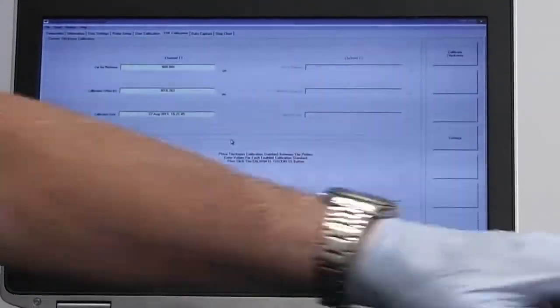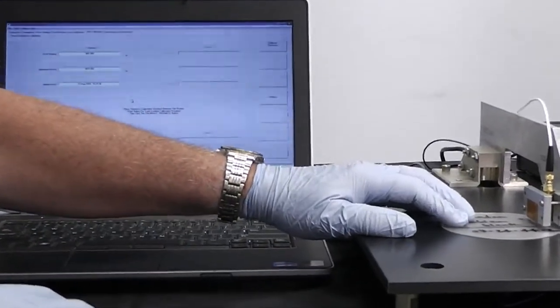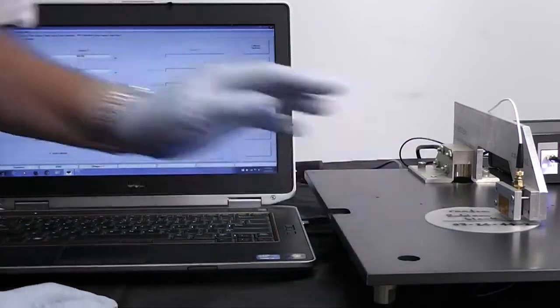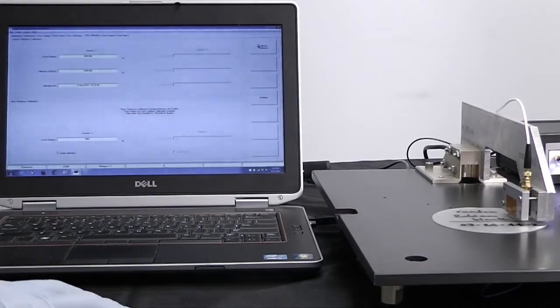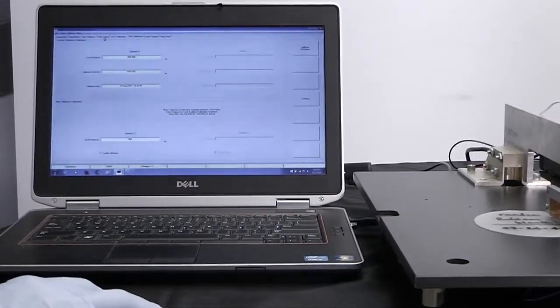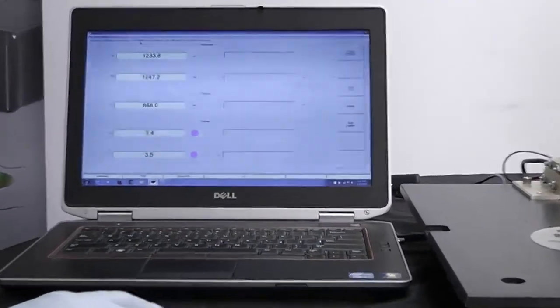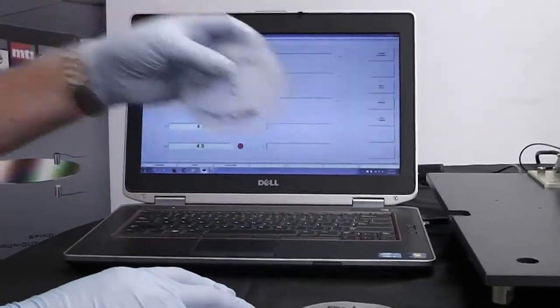We're then going to go back to the thickness calibration window. We're going to put our first wafer which is 868 microns in between the two probes. I've got to make sure I get that centered correctly. And then we're going to hit calibrate thickness. Once we do that, we're all set. We're good to go. We go back to reading thickness. And you can see that I'm reading the thickness of the wafer, 868. Let's take a look at this one here. It's 793.